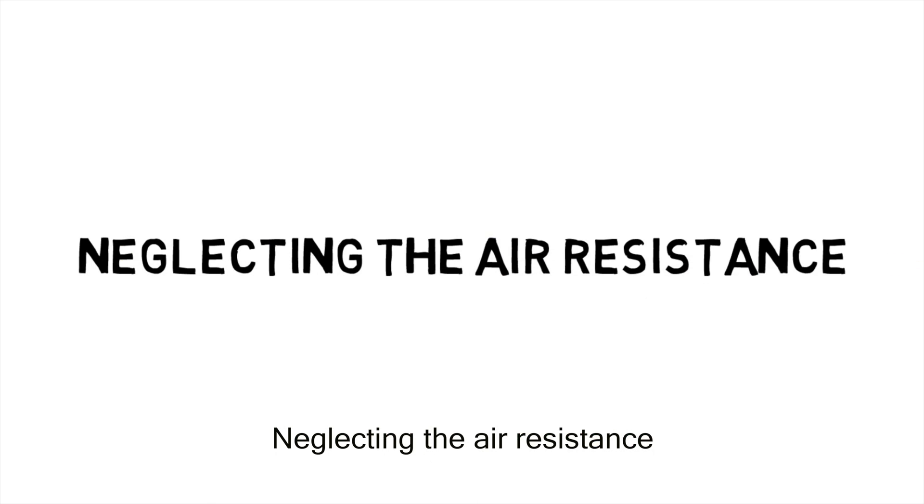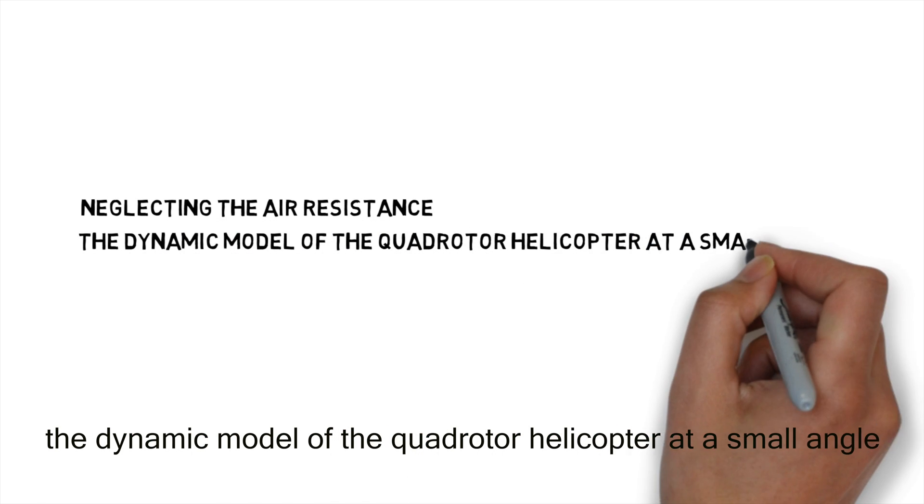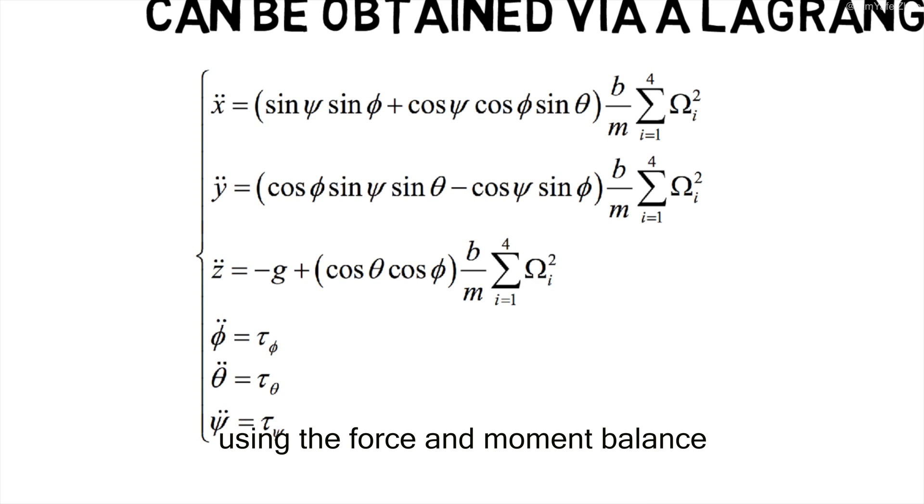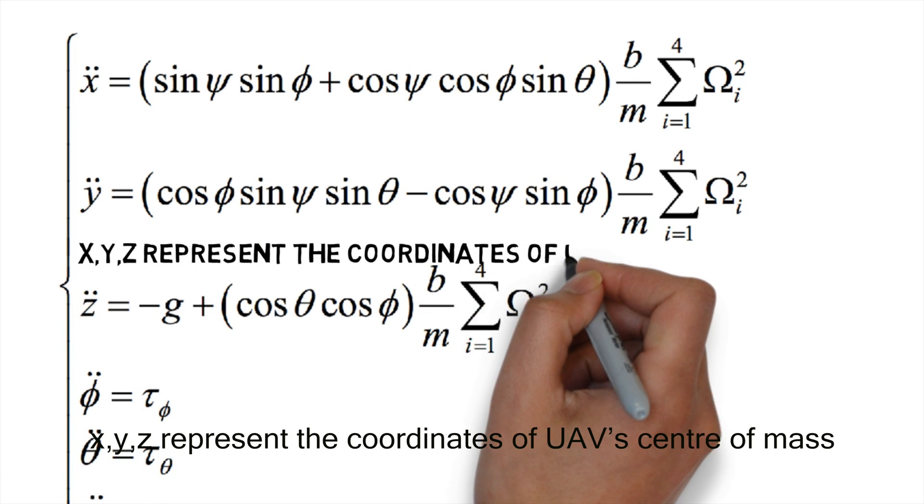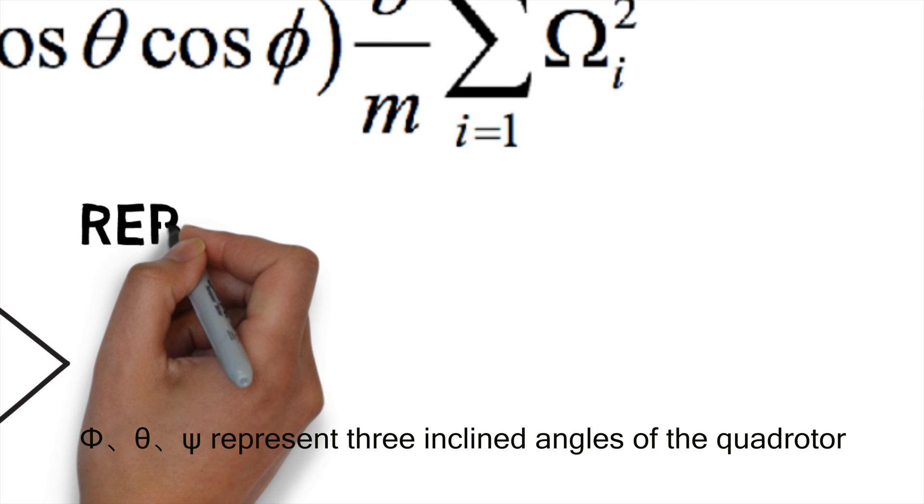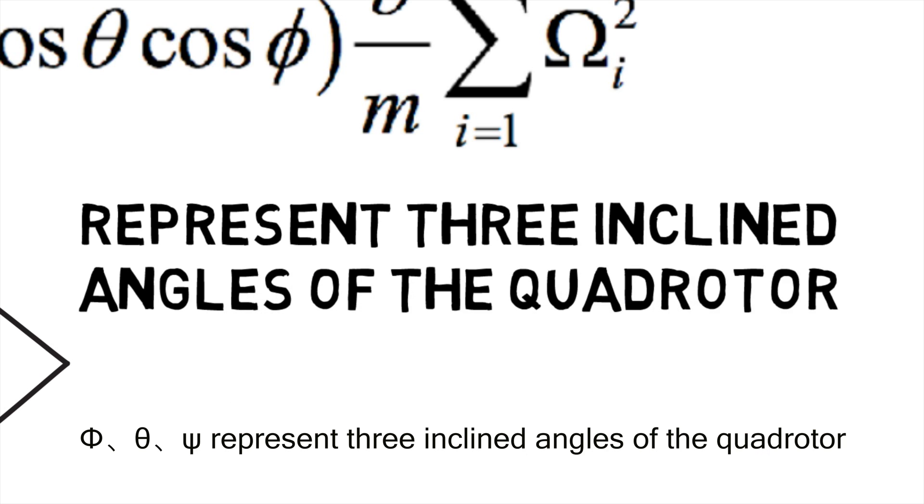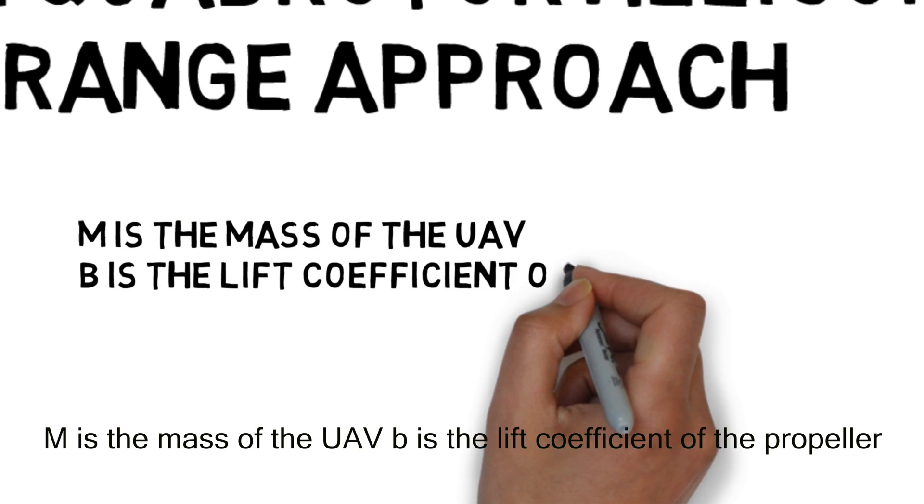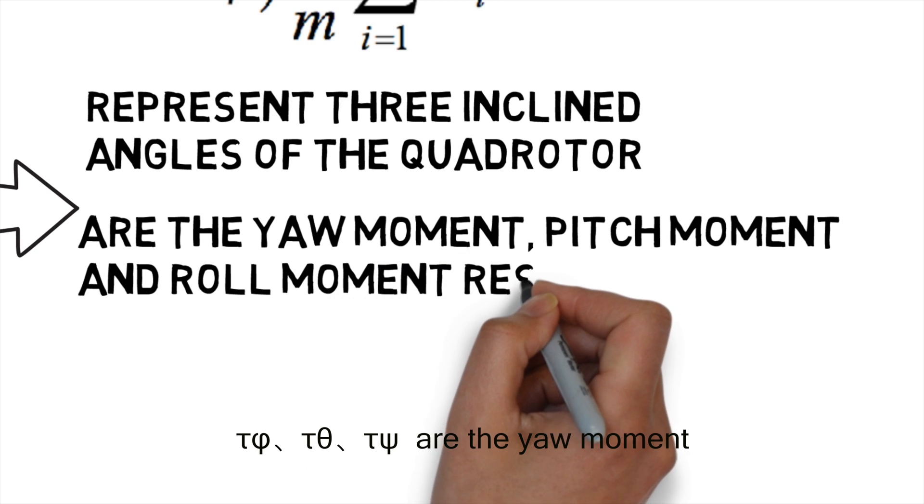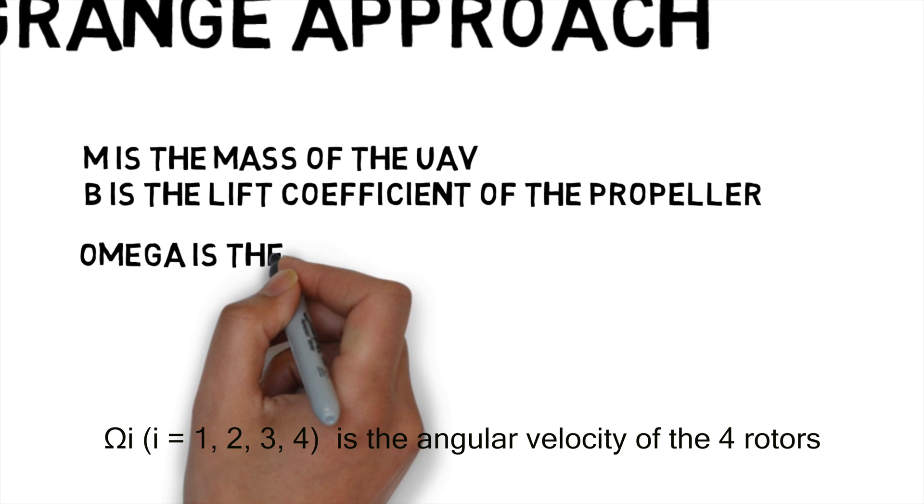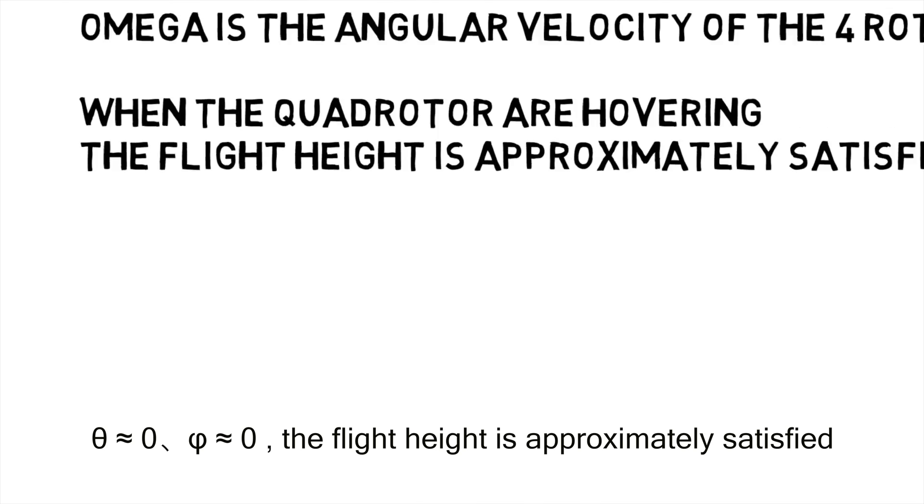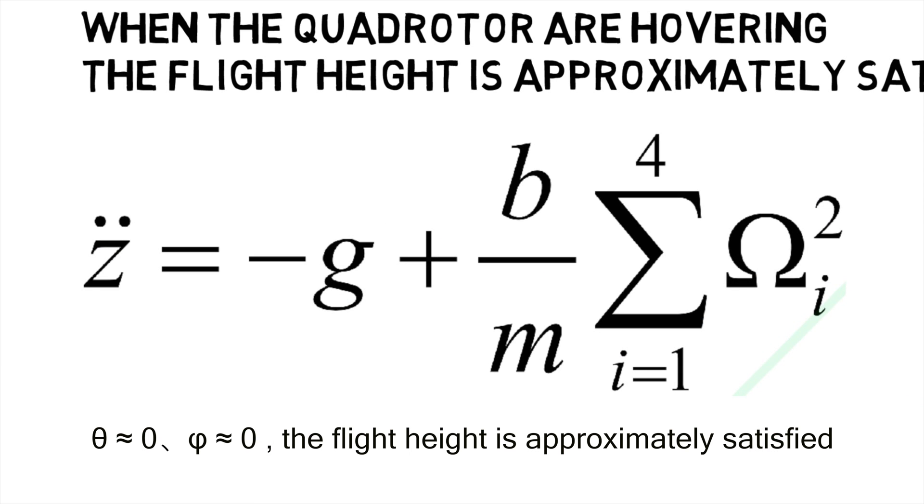Neglecting the air resistance, the dynamic model of the quadrotor helicopter at a small angle can be obtained via a Lagrange approach. The equations of motion can be written using the force and moment balance. X, Y, Z represent the coordinates of the UAV's center of mass in the initial coordinate system. Phi, theta, psi represent three inclined angles of the quadrotor. M is the mass of UAV, b is the lift coefficient of the propeller. Tau phi, tau theta, tau psi are the roll moment, pitch moment, and yaw moment. Omega is the angular velocity of the four rotors.